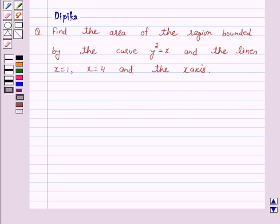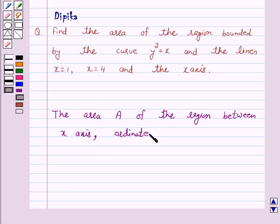Now, let us first understand how to find the area A of the region between the x-axis, ordinates x = a and x = b, and the curve y = f(x).